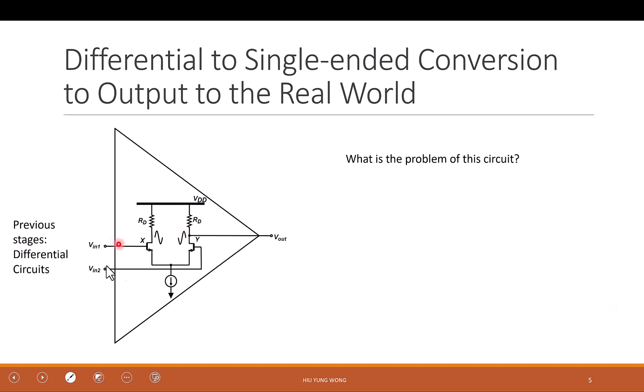A naive way is that I have a differential input from the previous stage — this is a differential amplifier — and I just take one of the outputs. Isn't that a successful conversion? So what is the problem with this circuit? V out is only connected to one of the outputs. What is the problem? There's no noise rejection.